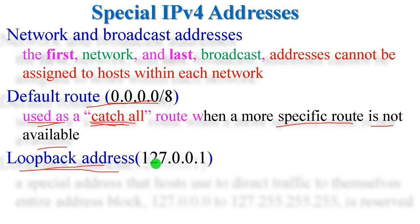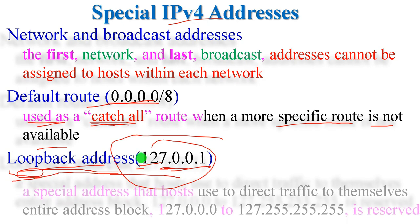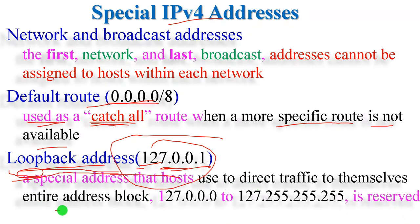The loopback address is 127.0.0.1. It is one part of the special IP version 4 address. The loopback address is used for testing. When you configure or install a network, you can check your configuration using the loopback address without needing a physical connection. It is a special address that a host uses to direct traffic to itself.